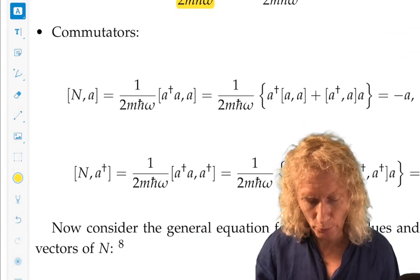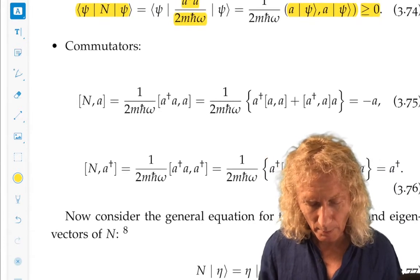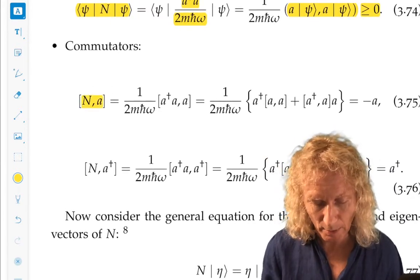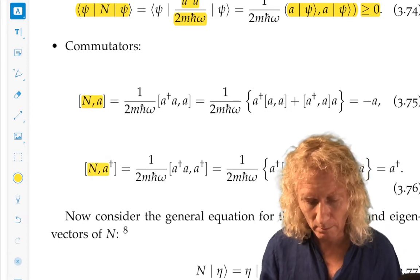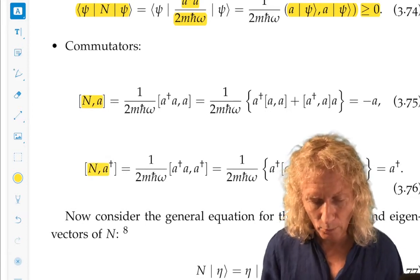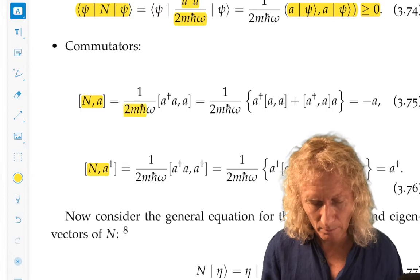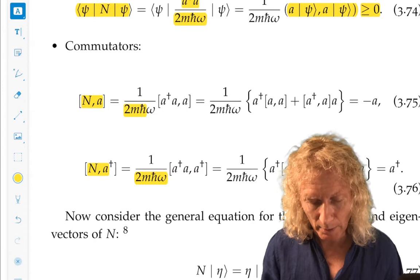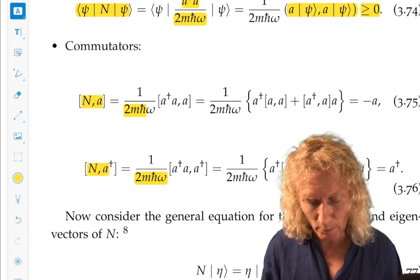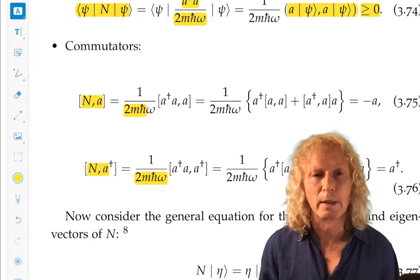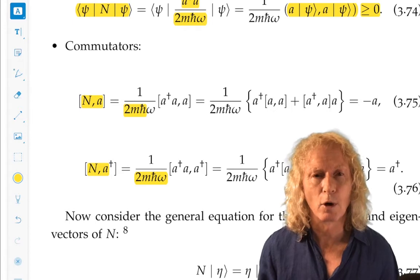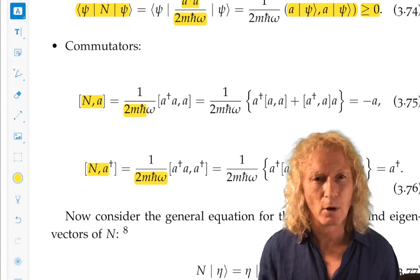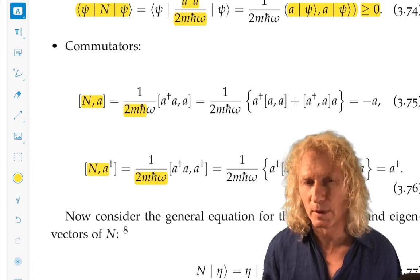Commutators. Crucial, crucial, crucial. Commutator of N with A and commutator of N with A dagger. Okay. So you have this constant out front. But look at what you have. A dagger A, commutator with A. A dagger A, commutator with A dagger. Remember, when I did commutators, we had these four properties. And I said, you're going to use them all. This is the third property in that list.